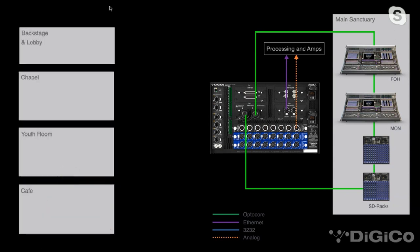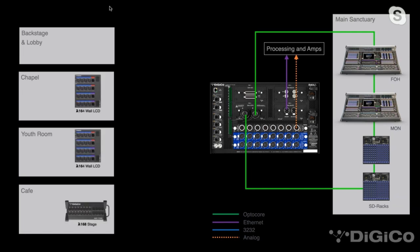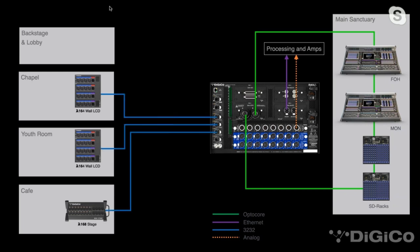Now we have these other spaces: a backstage and lobby zoned together, a chapel, a youth room, and a cafe — all needing some form of I/O. We're going to add a 164 wall LCD into the chapel and the youth room, and a more portable version, the 168, for the cafe. We simply connect those to the existing ports on the Foria 4. Now we actually have an audio path from those rooms through the Foria 4 and via OptiCore back to the Quantum 7.